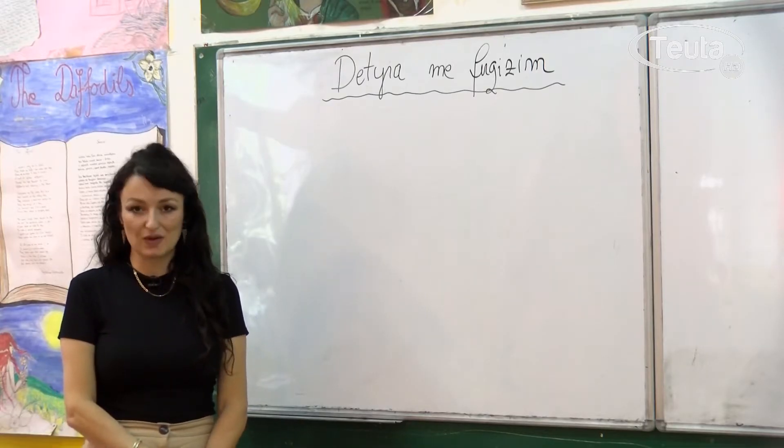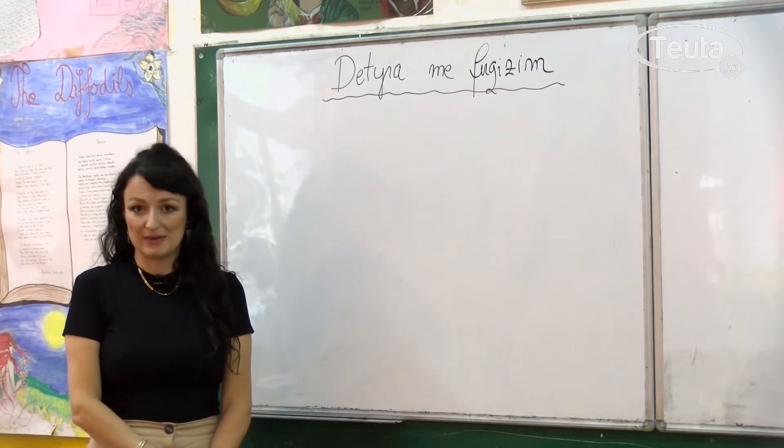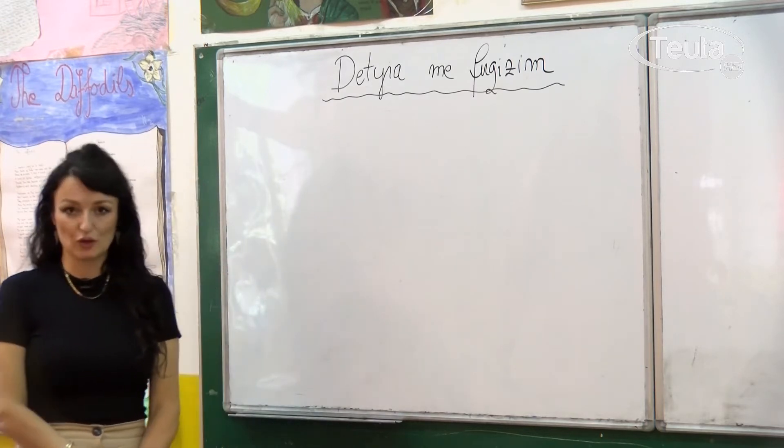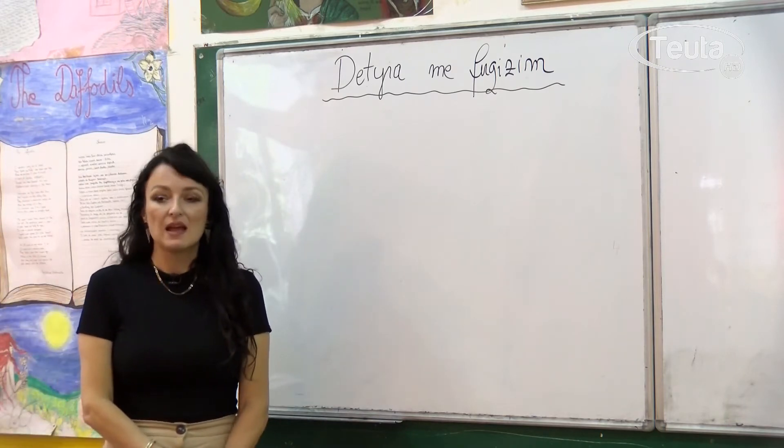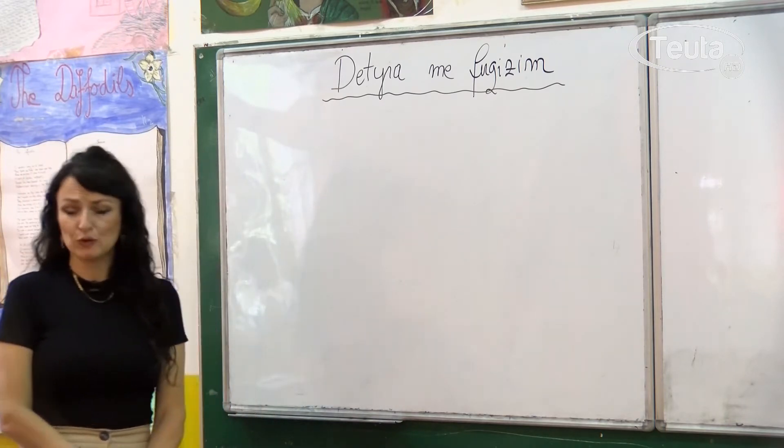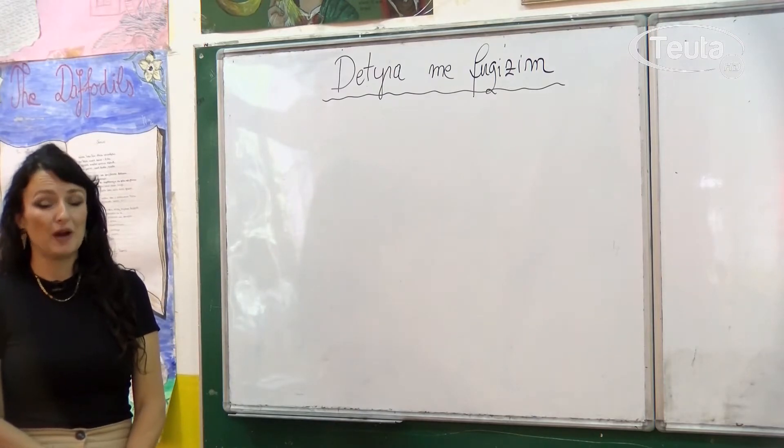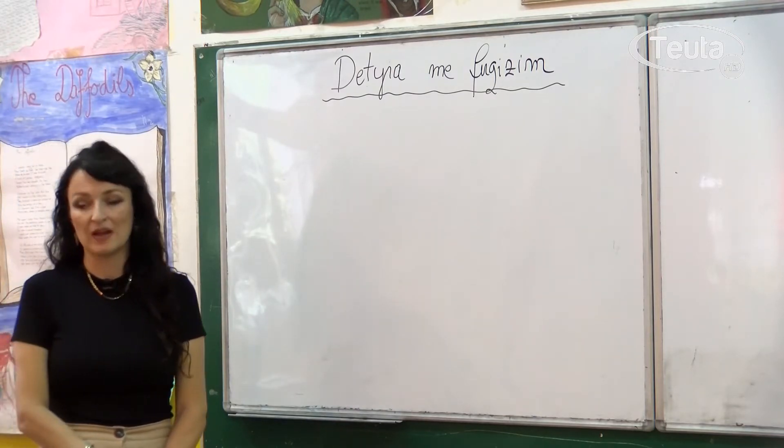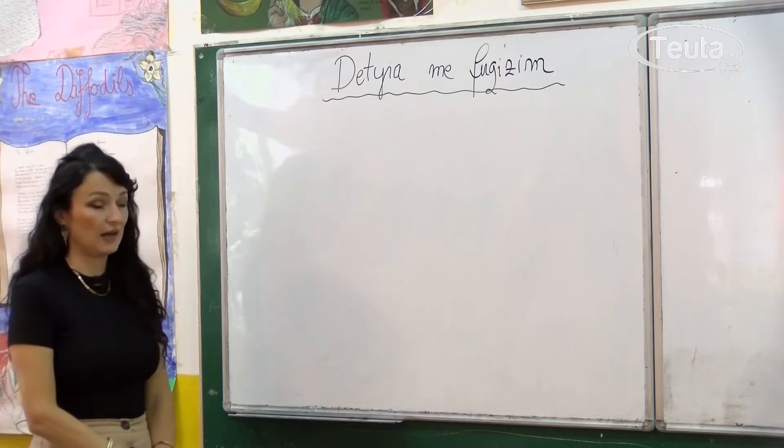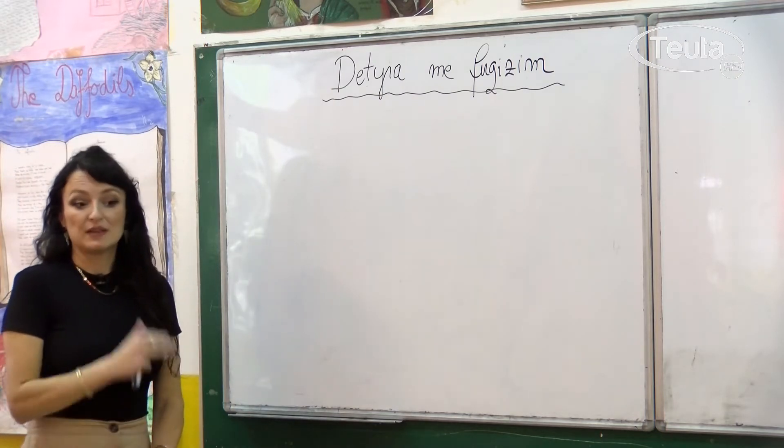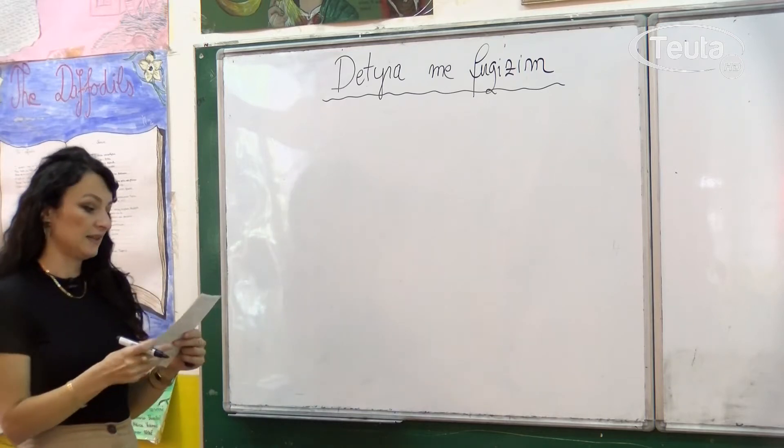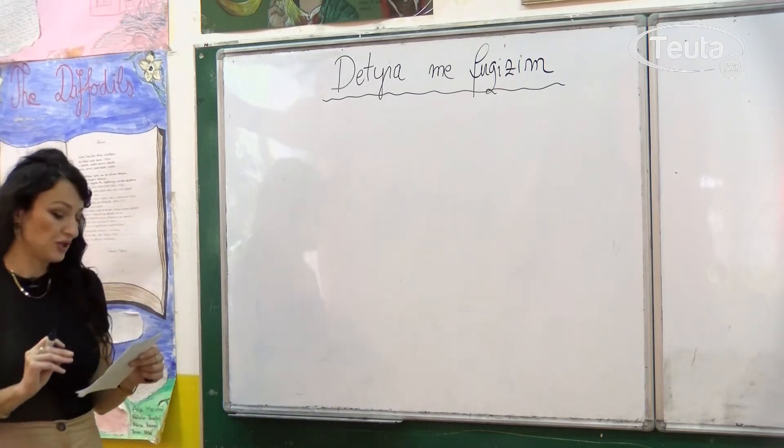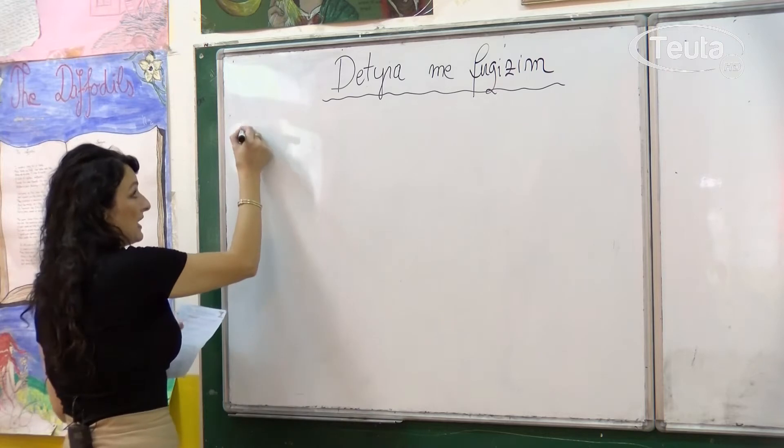Mirëdita, kjo është ora e matematikës për vitin e dytë gjimnaz dhe ne sot do të vazhdojmë me fuqitë. Në orën e kaluar kemi mësuar vetitë e fuqive dhe zbatimin e tyre në detyra të thjeshta, pra kemi punuar fuqitë me eksponent numër negativ. Sot do të ushtrojmë disa detyra me fuqizim dhe do t'i ndajmë ato në disa tipe në mënyrë që ju ta keni më lehtë t'i kuptoni.